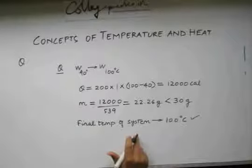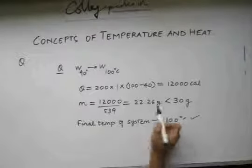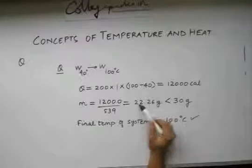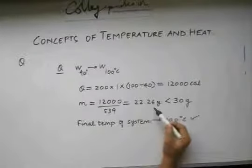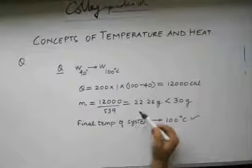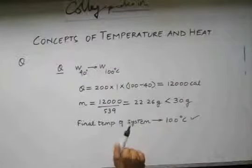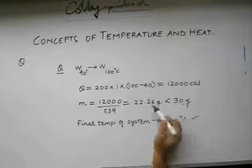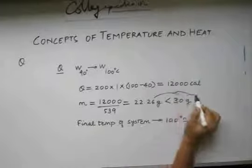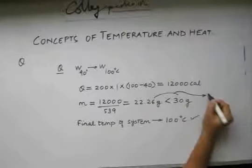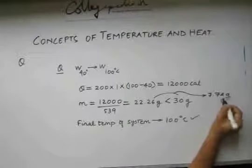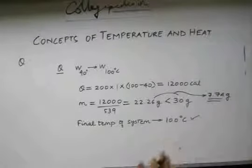This is the amount of steam which is required to release its latent heat of vaporization. The remaining part remains in the form of steam. Therefore, the difference between 30 and 22.26 will give us the remaining steam, which is nothing but 7.74 grams. This answers another part of our question.